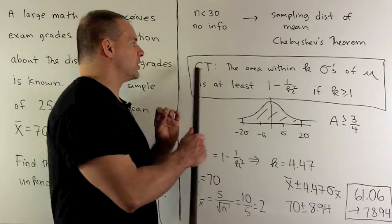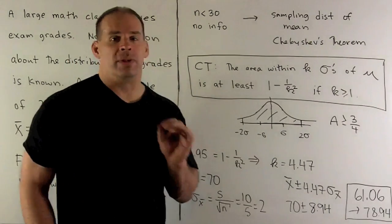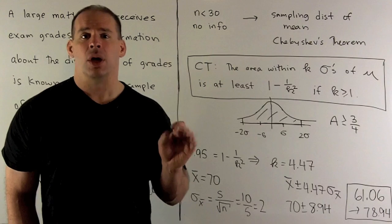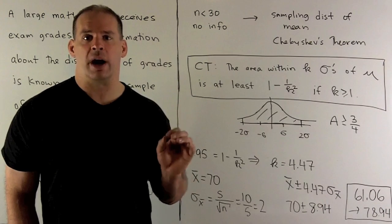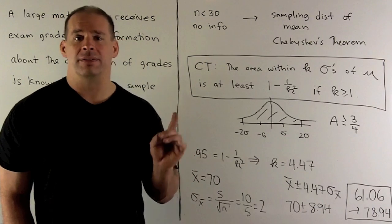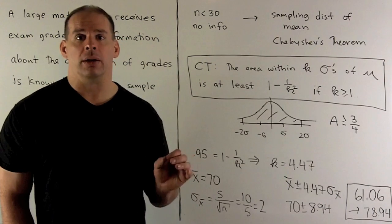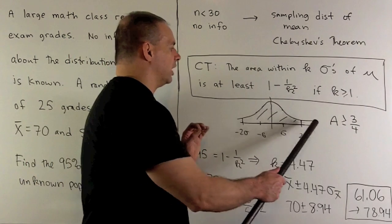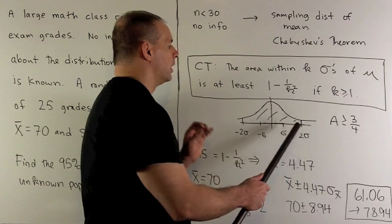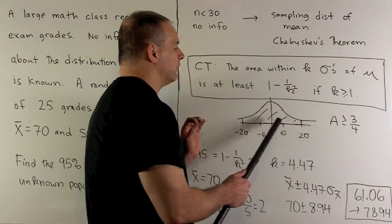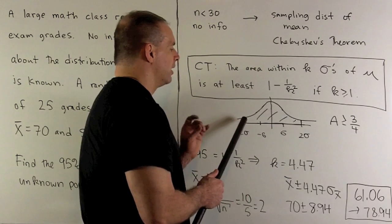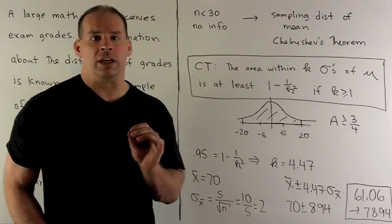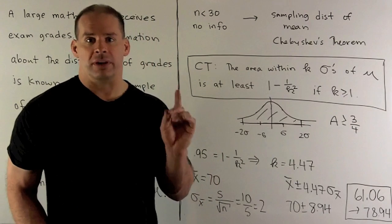What Chebyshev's theorem says: the area within k standard deviations of your mean is going to be at least 1 minus 1 over k squared, if k is greater than or equal to 1. For instance, if I have this distribution here and go out two standard deviations in each direction, then the area under our curve is going to be greater than or equal to three-fourths.